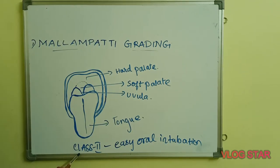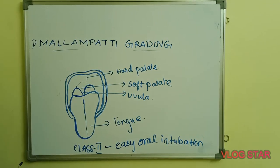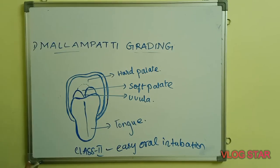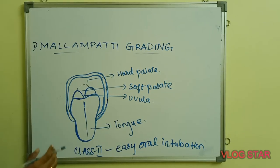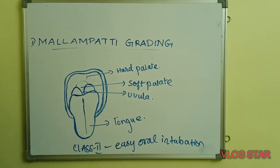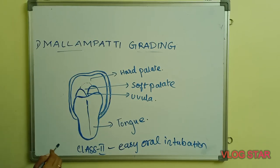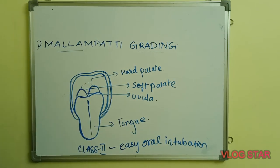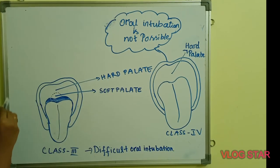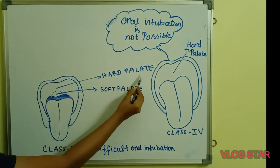Class 2 is associated with easy oral intubation. Overall, we can say that in Mallampati Class 1 and Class 2, oral intubation can be comfortably done. In Mallampati Class 3, the structures visualized are the hard palate and soft palate.